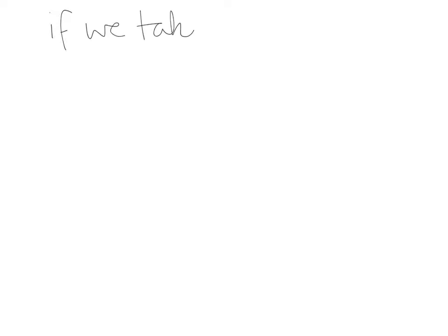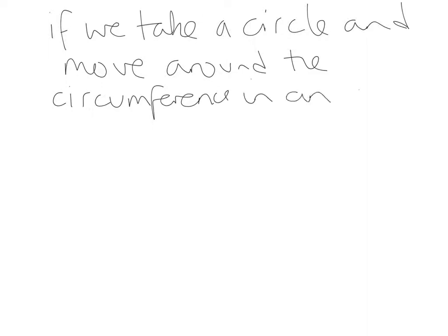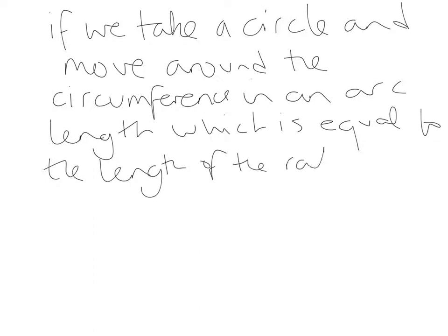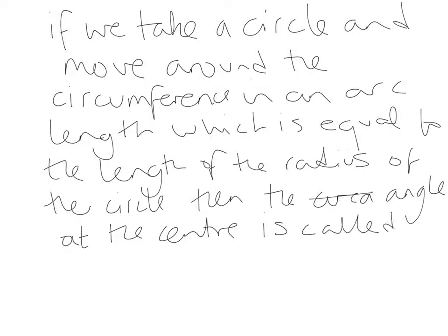If we take a circle and move around the circumference which is equal to the length of the radius of the circle, then the angle at the center is called one radian.